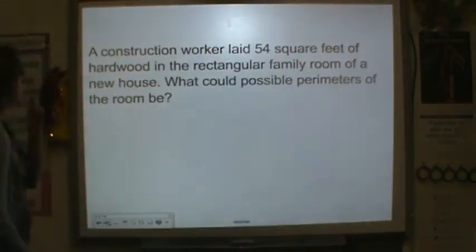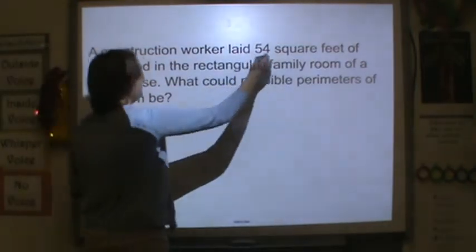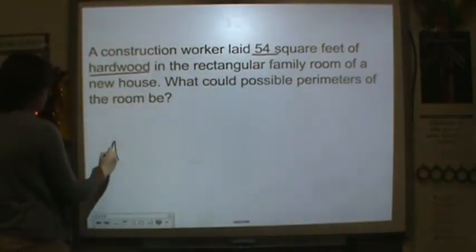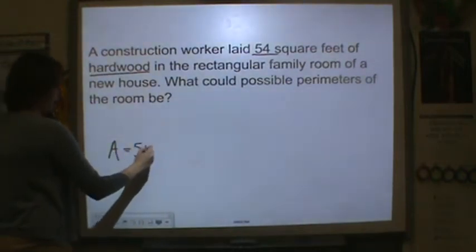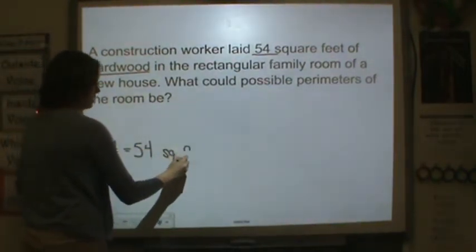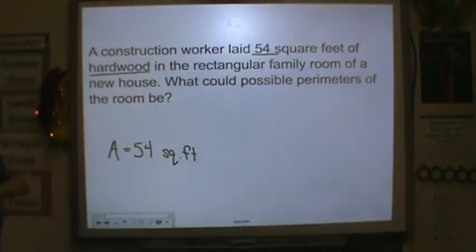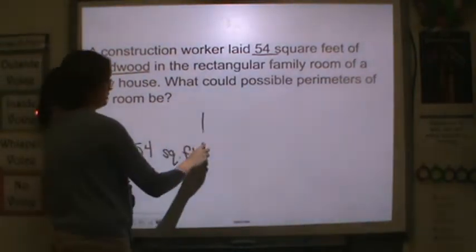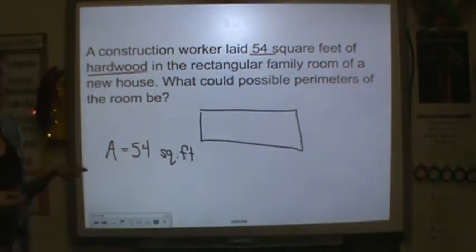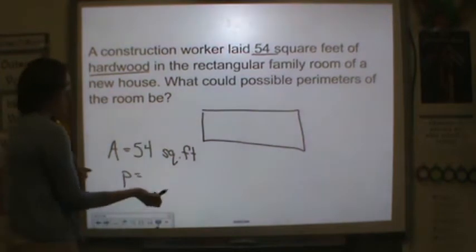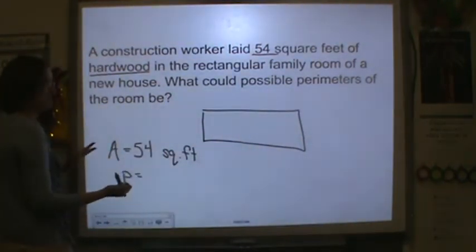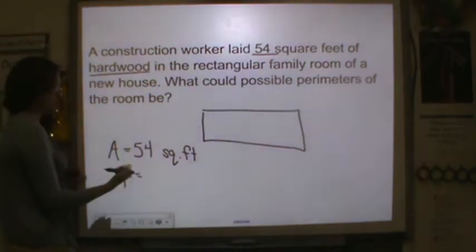Let's try another one. A construction worker laid 54 square feet of hardwoods. So I know that if it's square feet, we're talking about area, because area is squared in a rectangular family room. The question is, what could the possible perimeters be? So we know if the area is 54, I need to think of two numbers that I could multiply to get to 54.